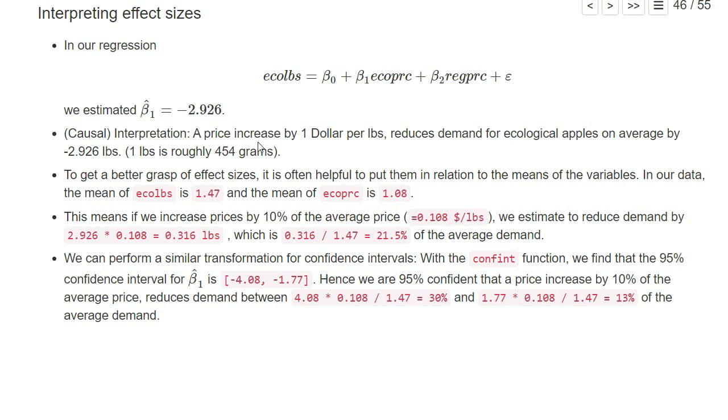What it means is that a price increase by one dollar per pound reduces the demand for ecological apples on average by minus 2.9 pounds. One problem with these numbers is that they don't tell you much unless you have a very good understanding of the units involved. For example, if you don't live in an English-speaking country, you probably don't know what one pound (1 lbs) actually means—it's 454 grams.